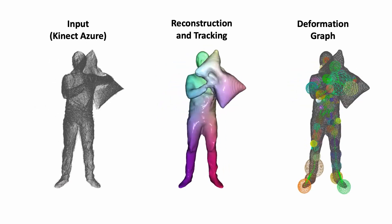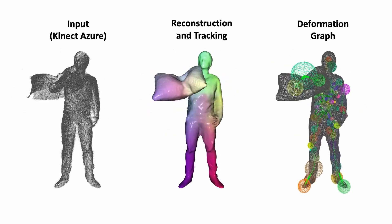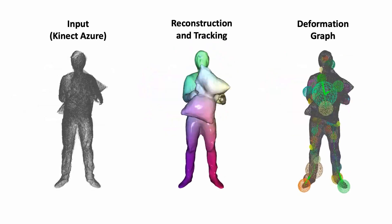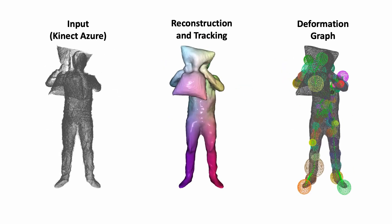Based on a global deformation graph, our approach is able to handle fast motion. The deformation graph as well as the surface reconstruction is optimized on the entire sequence, and thus is not limited by frame-to-frame tracking and graph estimation as previous state-of-the-art methods.